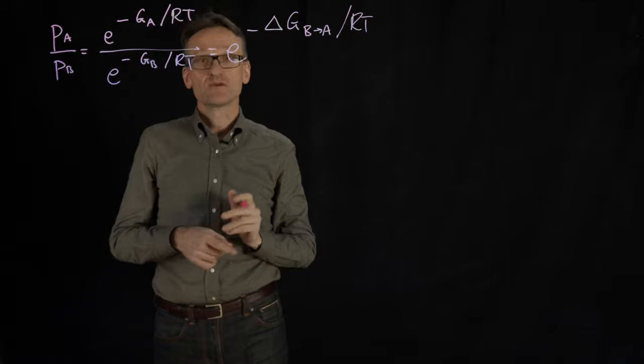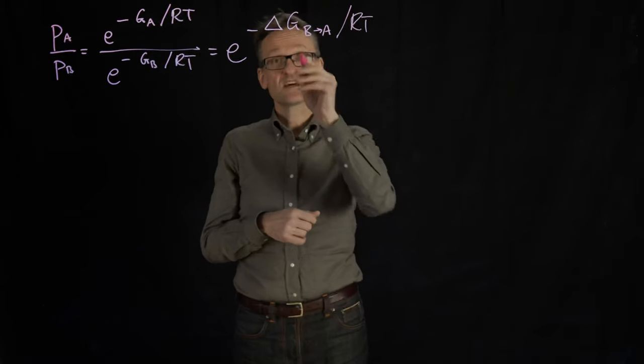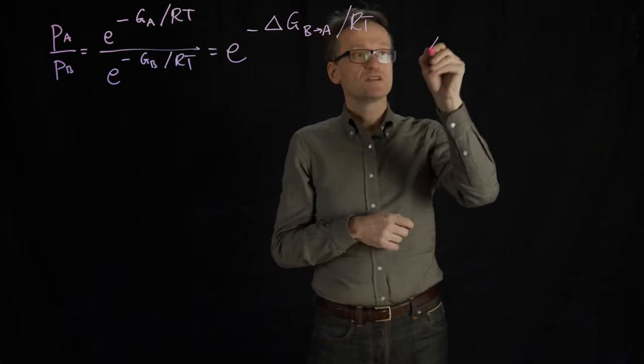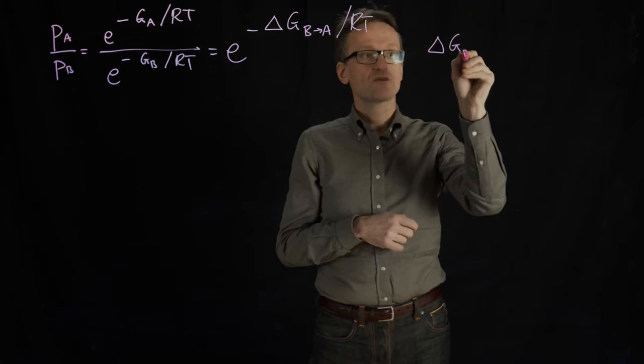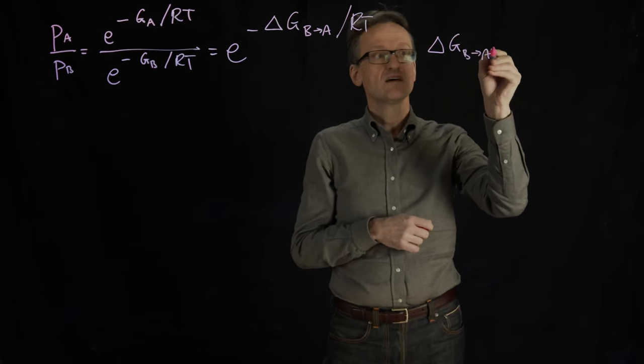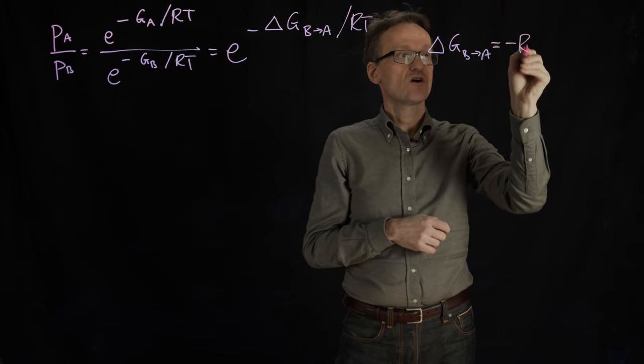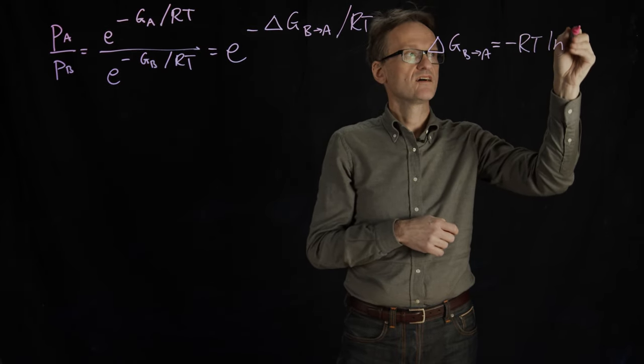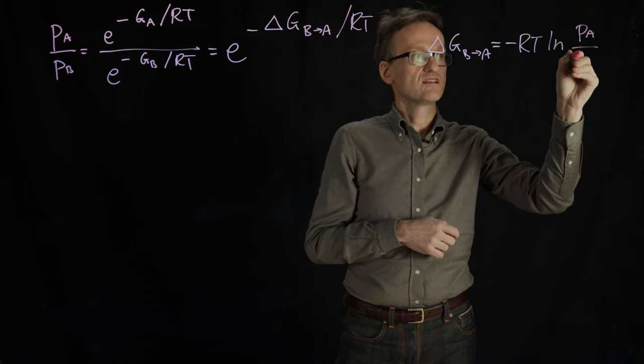That doesn't look like a simplification, but it is. Because in the next step I can now solve this for delta G. And that means that delta G going from B to A equals minus RT ln PA divided by PB.